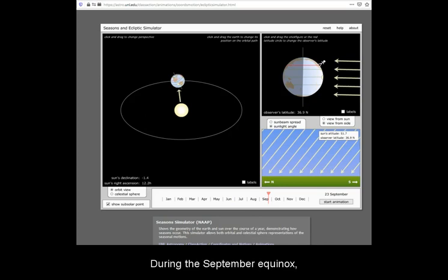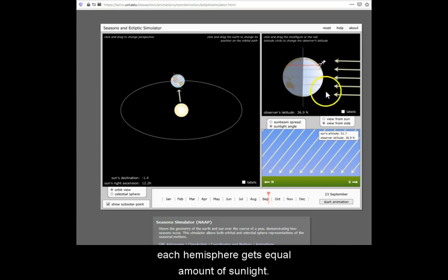During the September equinox, even though the Earth's axis is tilted, it is perpendicular to the direction of the Sun, and hence, each hemisphere gets equal amounts of sunlight.